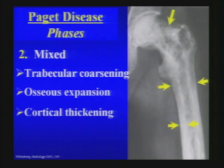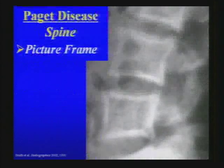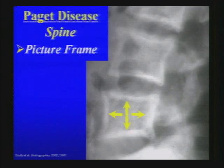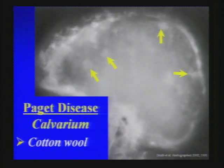Trabecular coarsening, osseous expansion, and cortical thickening are three diagnostic criteria of Paget's disease that should be committed to memory. The sclerotic or osteoblastic phase can result in the ivory vertebral body, for which the differential includes osteoblastic metastasis and lymphoma. Buzzwords for Paget's include the picture frame vertebral body. Osteoporosis circumscripta is the well-defined osteolysis in the calvarium. The calvarium in the sclerotic phase may show a cotton wool appearance.